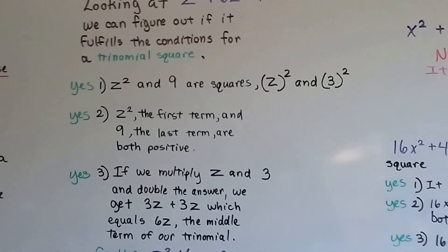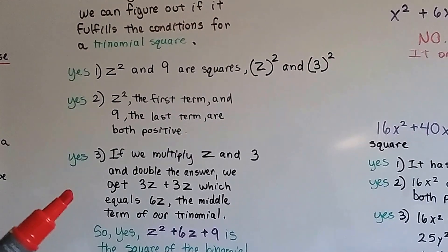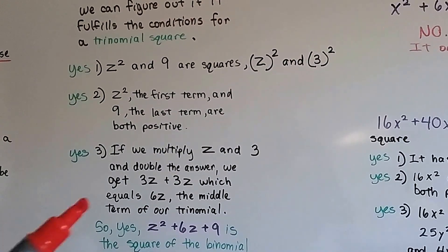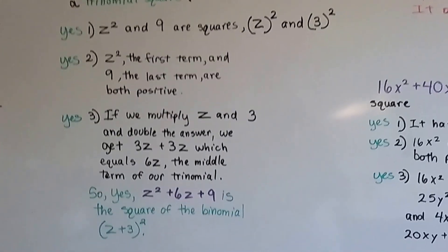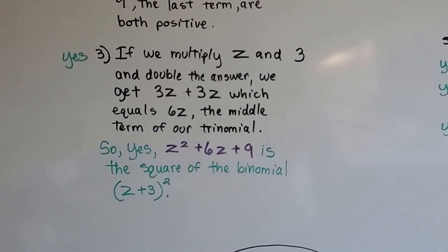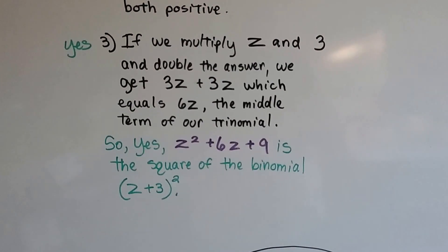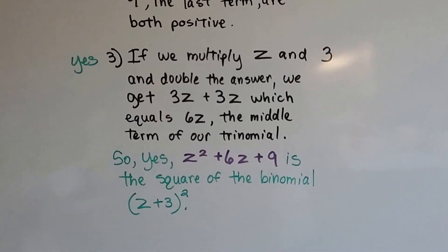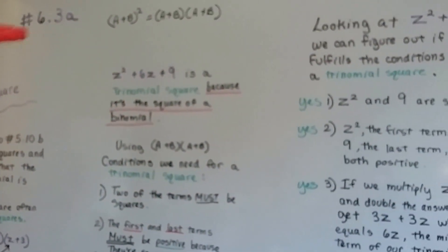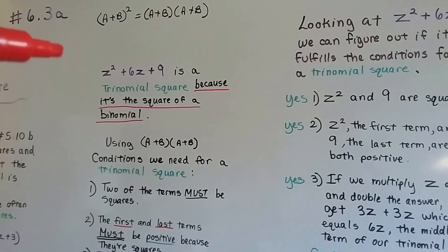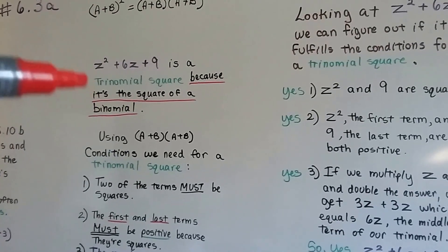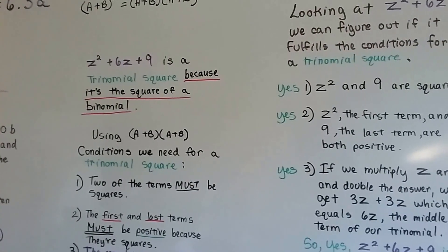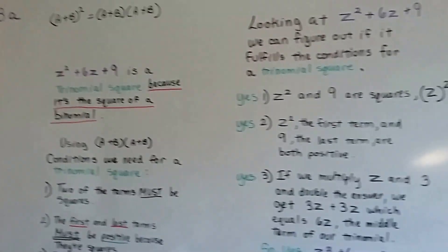And if we multiply 3z and 3 and double the answer, 3z plus 3z, we get 6z and that's the middle term. So yes, it is the square of a binomial. It's a trinomial square. So remember, it's a trinomial square if it's the square of a binomial. That's really important. You should write that down. It's a trinomial square if it's the square of a binomial.